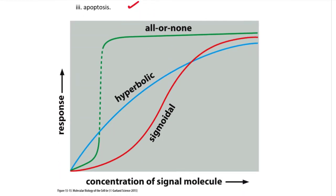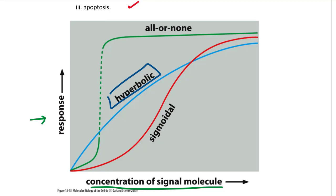In this graph, we have the response on the y-axis and the concentration of the signaling molecule on the x-axis. With the hyperbolic response, as the concentration of the signaling molecule increases, the intensity of the response also increases about the same amount. With sigmoidal, there is very little response initially, but then the response ramps up. With all-or-none, there is very little response when concentration is low, but as the concentration reaches the threshold, you get the full response.